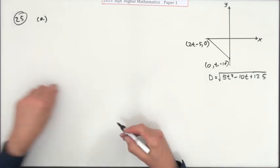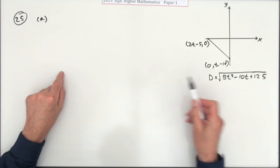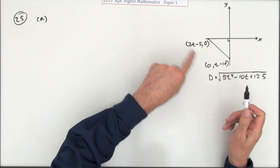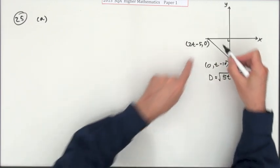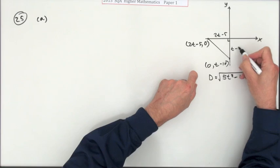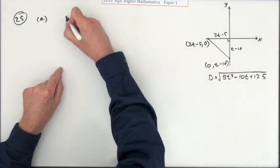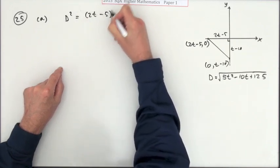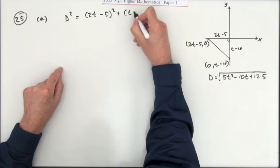For two marks. It's a distance between two points, but since it's in this diagram instead of seeing x2 minus x1 and so on, that simply means that this length is 2t minus 5 and that length is t minus 10. So I could just go straight in with d squared would be 2t minus 5 squared plus t minus 10 squared.